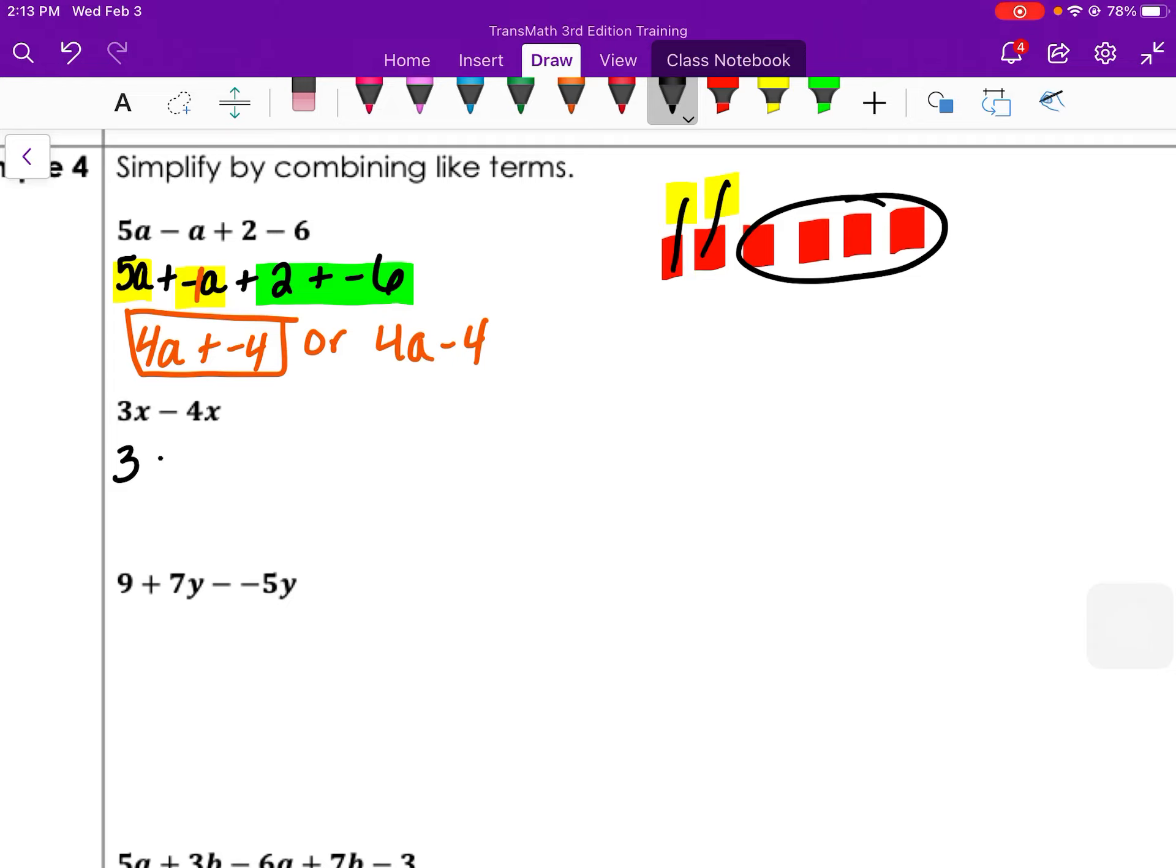3x minus 4x is the same thing as 3x plus negative 4x. They are like terms. You can combine them. 3 plus negative 4 is negative 1x. Or you can write it as just negative x. That implied coefficient. When the coefficient is 1, you do not need it. If it's negative 1, though, you still need the negative sign.